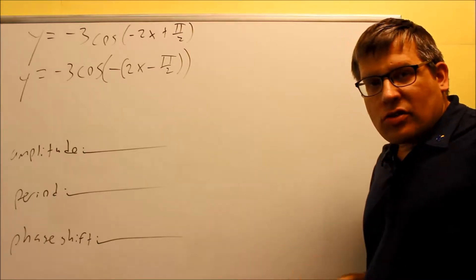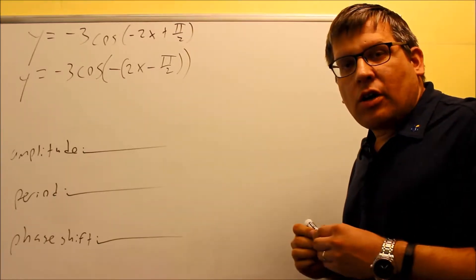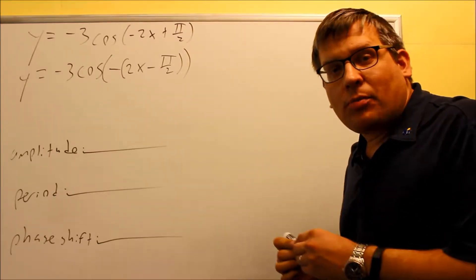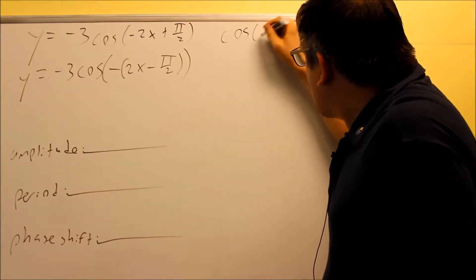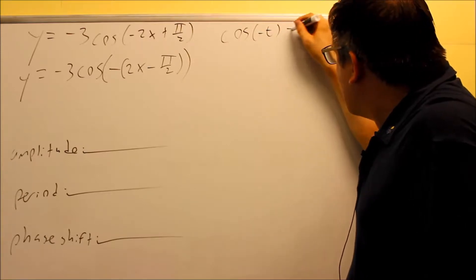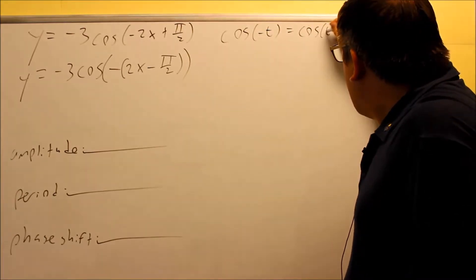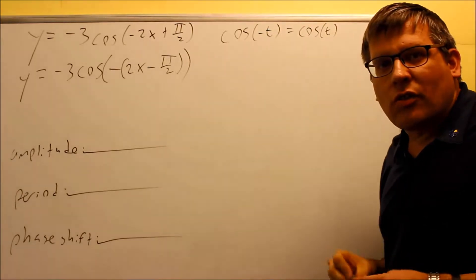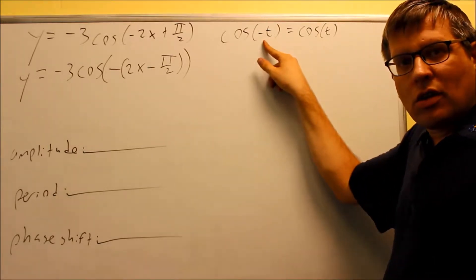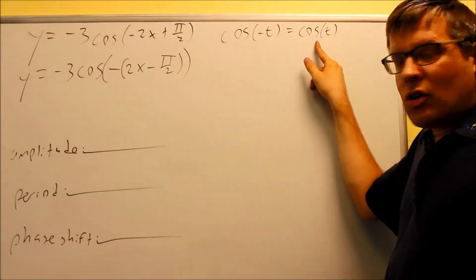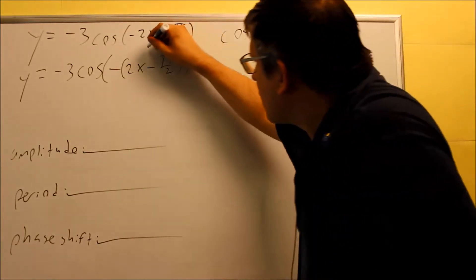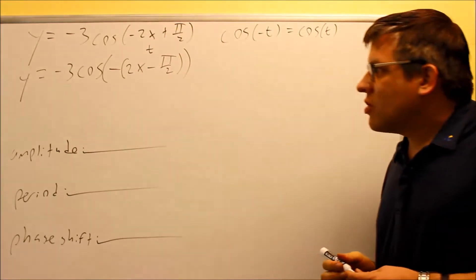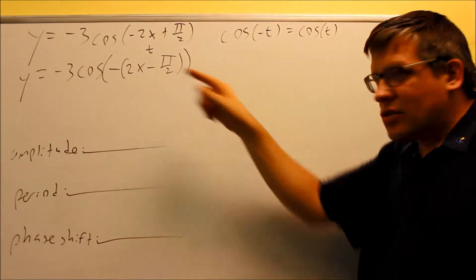What we're going to do next is we're going to do something that we talked about in a previous section. We're going to use the even-odd properties in order to simplify this. Previously, in the other section, we talked about that cosine of negative t is equal to cosine t. We said that if you have cosine of a negative angle, that's going to give you a positive. We're going to do the same thing right here because we're saying that all this stuff inside the parentheses, that's actually the same thing as a t.